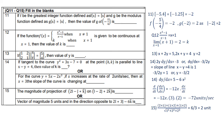Find a vector of magnitude 5 units in the direction opposite to (2i + 3j − 6k). The magnitude of the vector is √(4 + 9 + 36) = √49 = 7. The required vector is (5/7) times the negative of the given vector, which gives (5/7)(−2i − 3j + 6k).